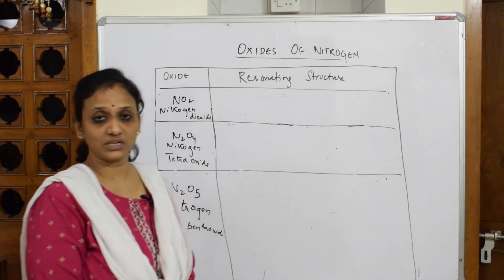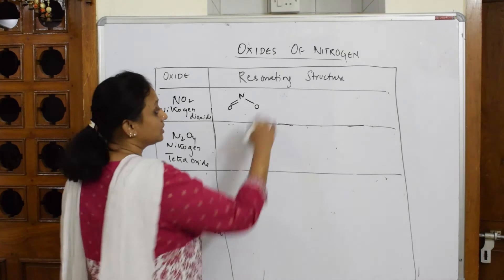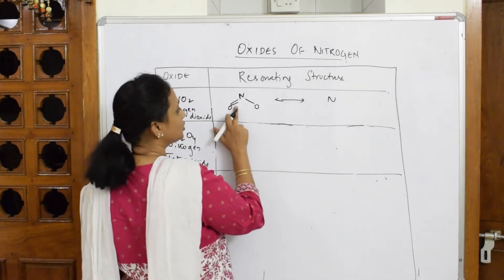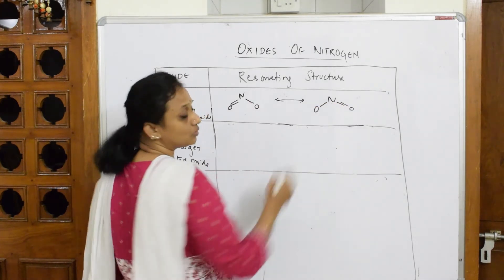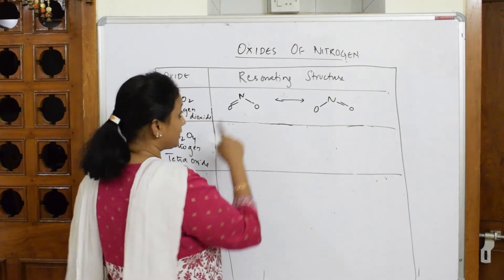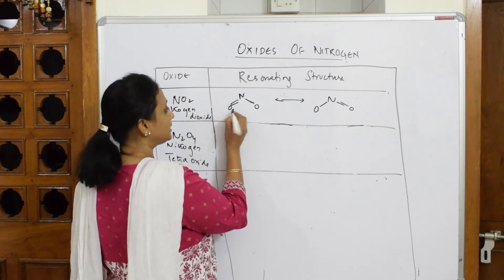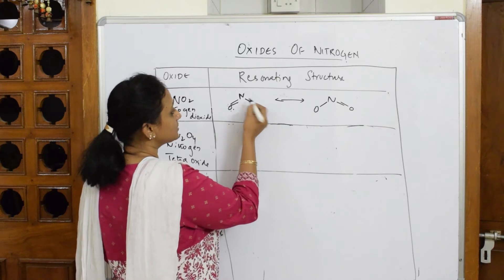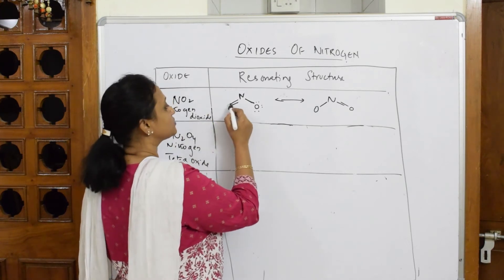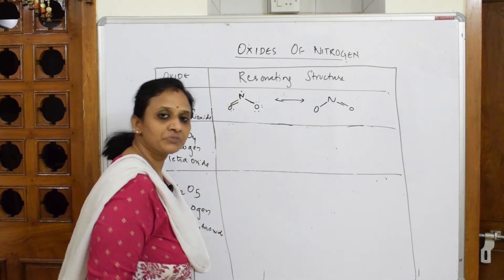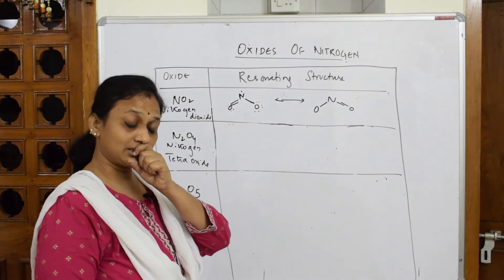For NO₂, just as we saw N double bond O earlier, draw nitrogen with one oxygen on each side. The resonating structure shifts the double bond to the other oxygen: N double bond O single bond O. Filling the electrons — 1 through 8 for one oxygen, done. Now nitrogen is an odd-electron species: 1, 2, 3, 4, 5, 6, 7 — odd electron. You have to mention that odd electron; you will get marks for that.